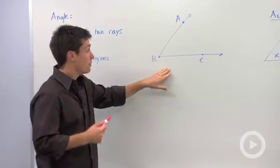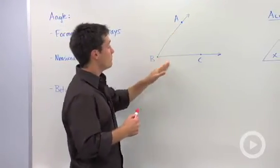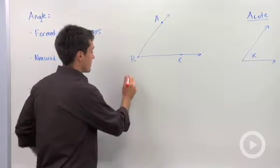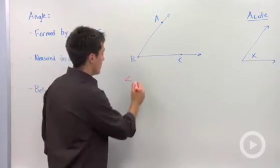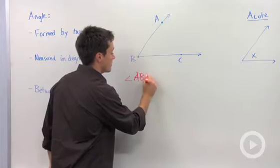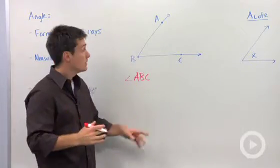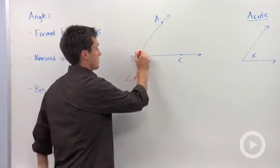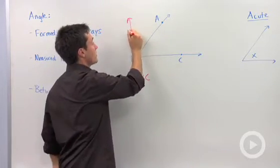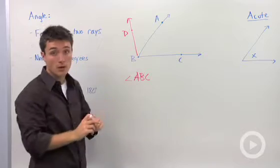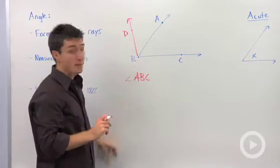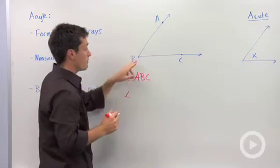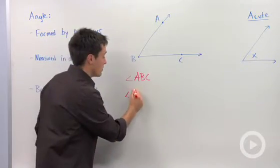If we look at an example where we have angle ABC, there's two ways that you could label this. You could write this as angle ABC, or since there are no other adjacent angles, that is, an adjacent angle would be something like this where it would share that vertex, that common endpoint. Since there are no other adjacent angles, you could also just label this based on the vertex, which is B.